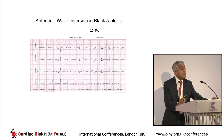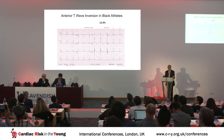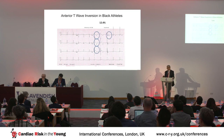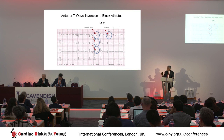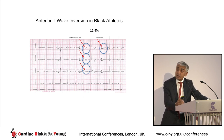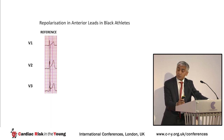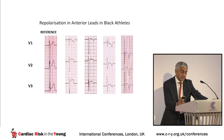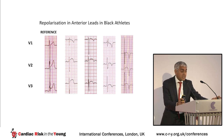The typical T wave anomaly seen in male black athletes is T wave inversion in leads V2, V3, and sometimes V4, preceded by J-point elevation and convex ST segment changes. The T wave also has quite an asymmetric distribution with a steep downward descent. All of the normal patterns of anterior T wave inversion seen in black athletes share the common feature of preceding J-point elevation and convex ST segment elevation.